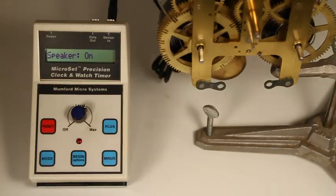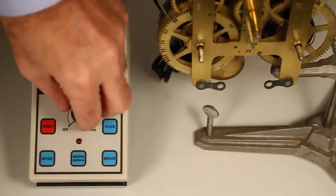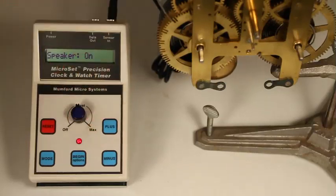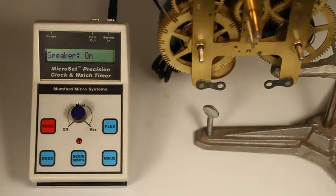You can make the problem less dramatic by turning down the level. Now we're getting accurate readings from the timer.